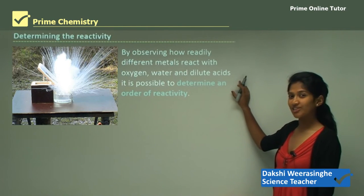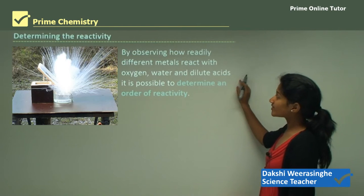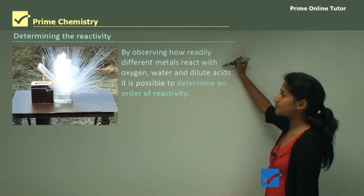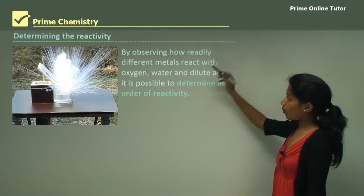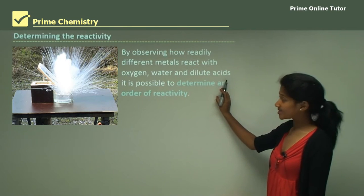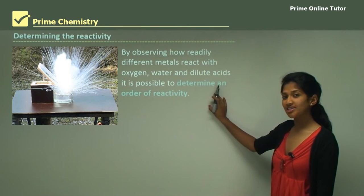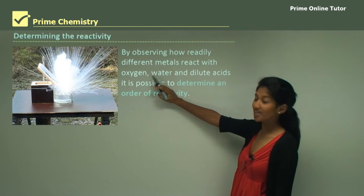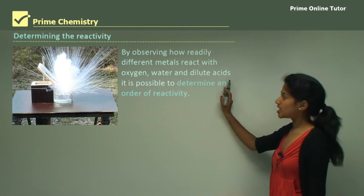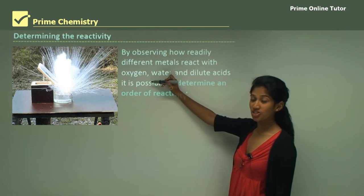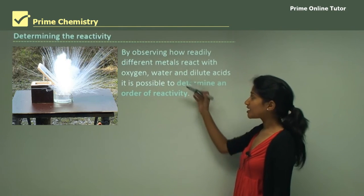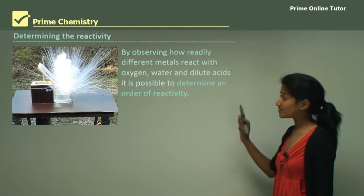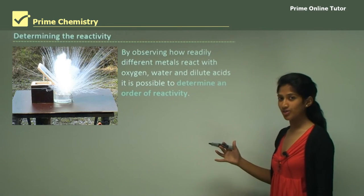Determining the reactivity of metals is by observing how readily different metals react with oxygen, water, and dilute acids, and that way you can determine the order of reactivity. First you'll be considering oxygen, then water and dilute acids. Anything that reacts with oxygen is quite reactive, water moderately reactive, and dilute acids not so reactive.